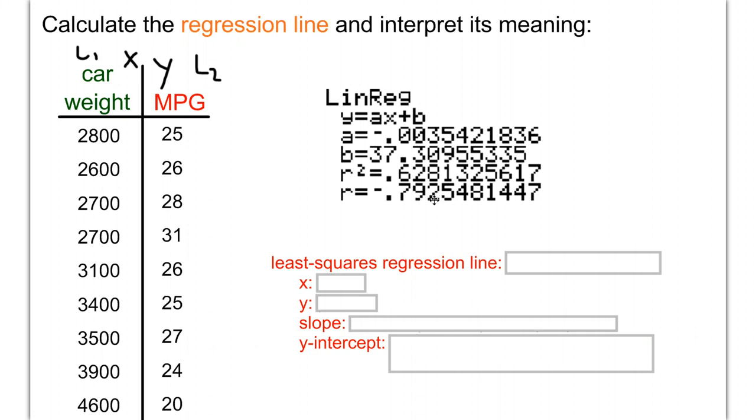First, we want to write the least squares regression line. To do that, follow the pattern y equals ax plus b. Simply write y equals, and instead of the letter a, put the actual number it stands for.